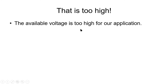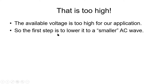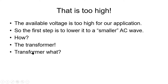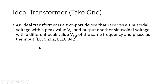The first obstacle is that the available voltage is very often too high for our applications, so the first step is to lower that AC to a smaller AC wave — using a transformer. A transformer is a device that has two ports: an input port and an output port. It receives a sinusoidal voltage on the input port with a given amplitude V_in, and it outputs another sinusoidal voltage with a reduced amplitude V_out, at the same frequency and same phase.